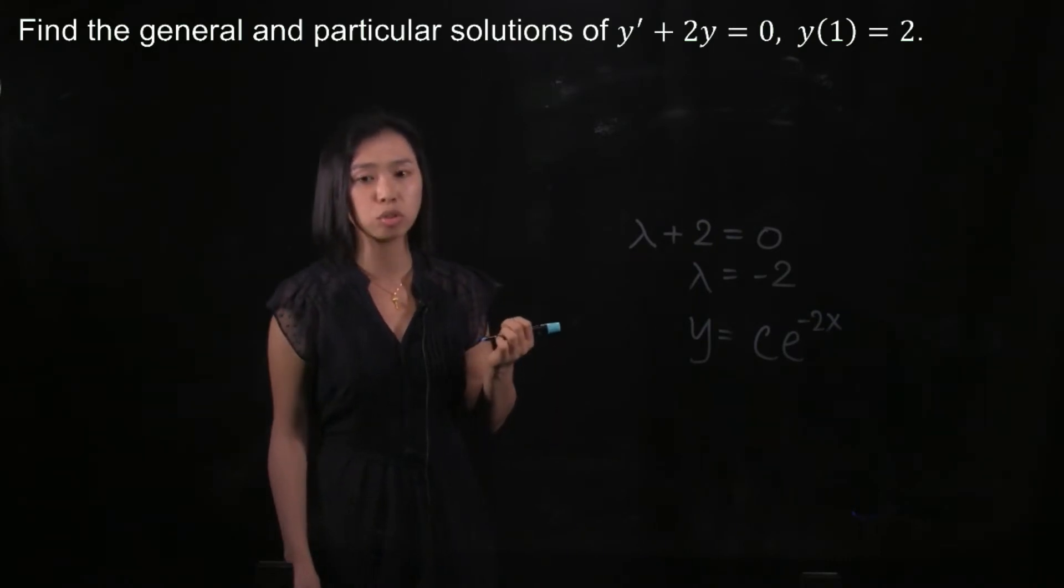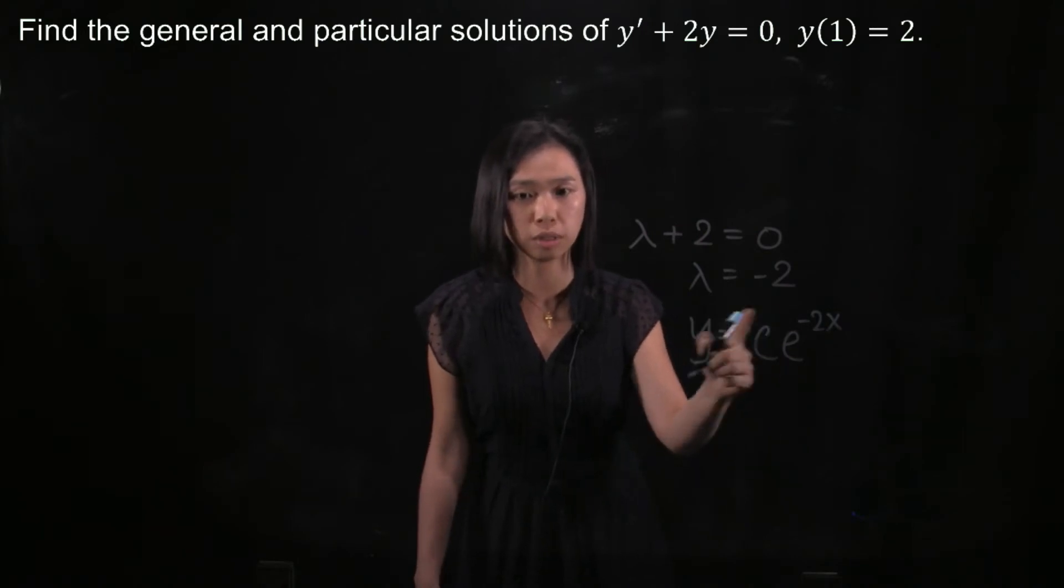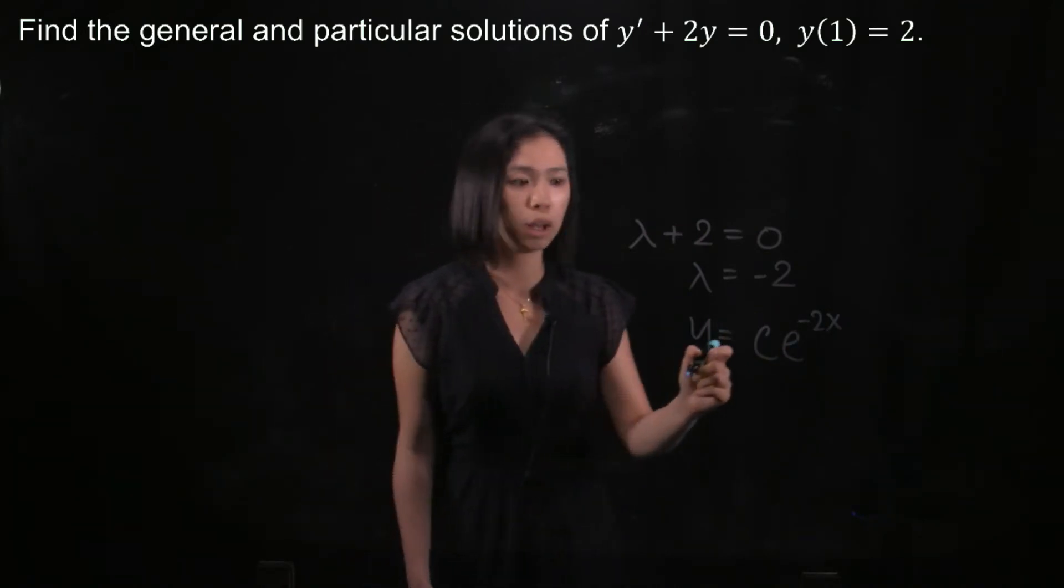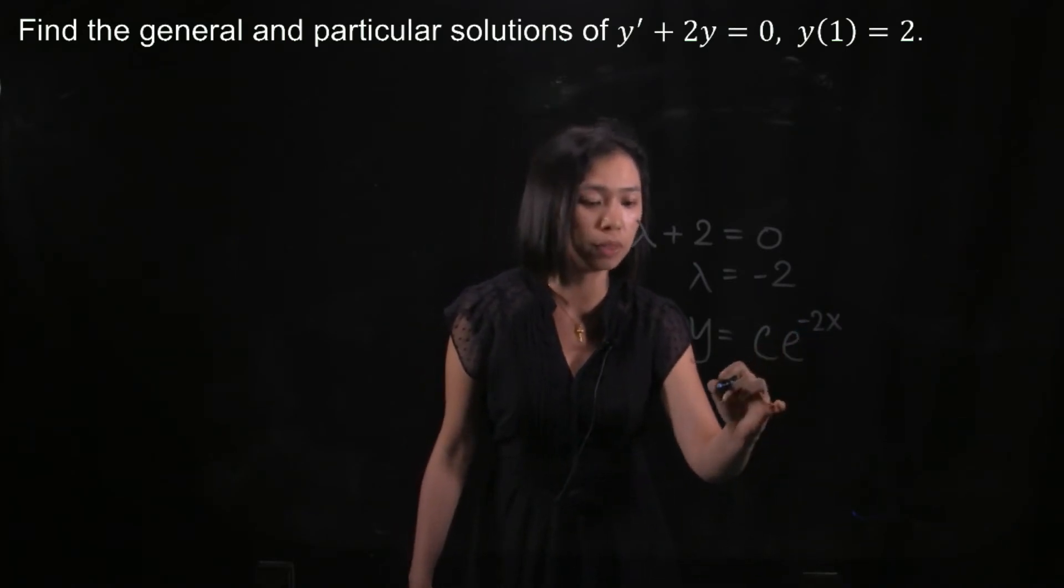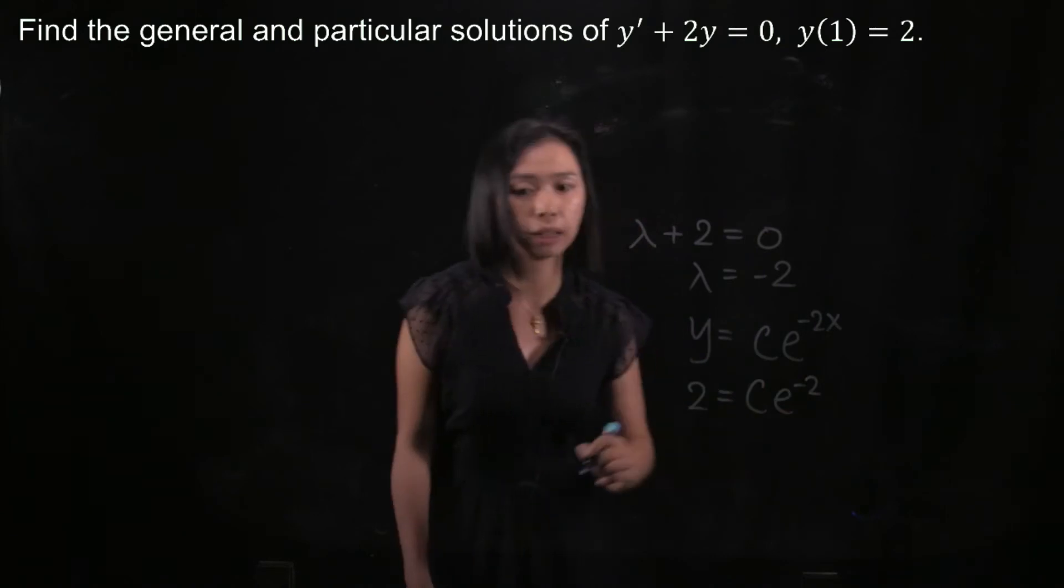And then for the particular solution, what we have to do is substitute x = 1 and y = 2 in this equation so that we can find the C. So we substitute x = 1 and y = 2, so we will have C e^(-2).